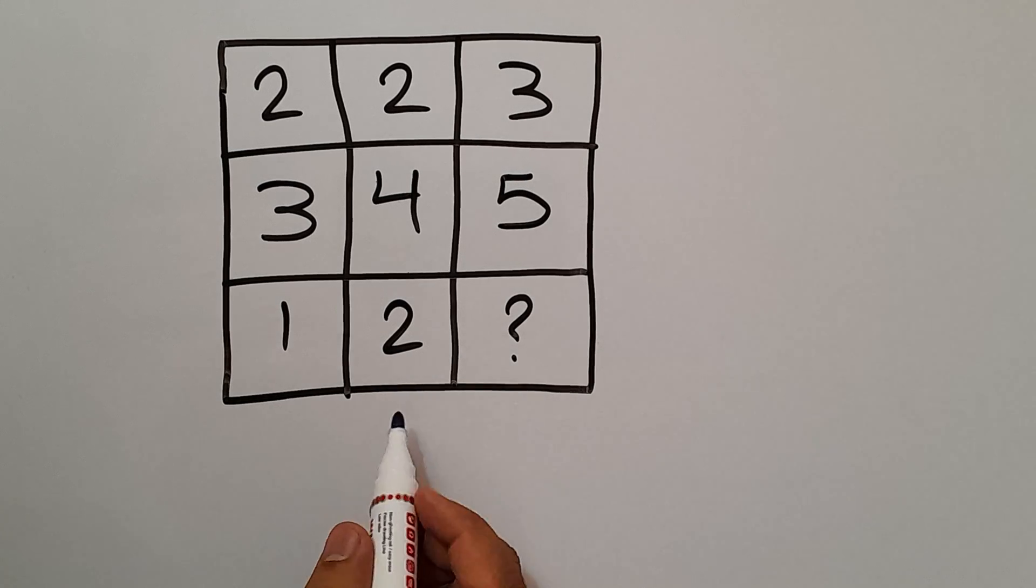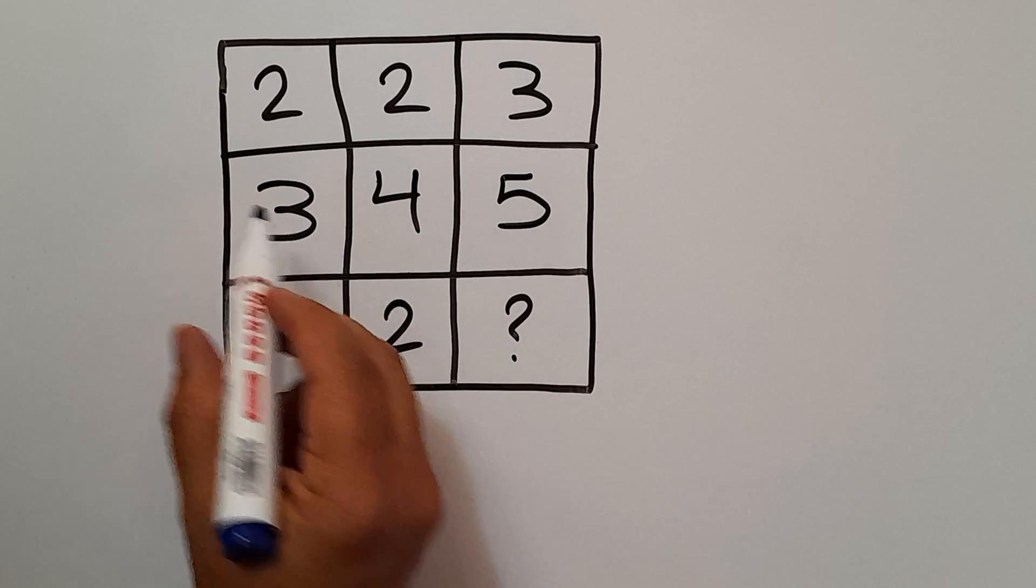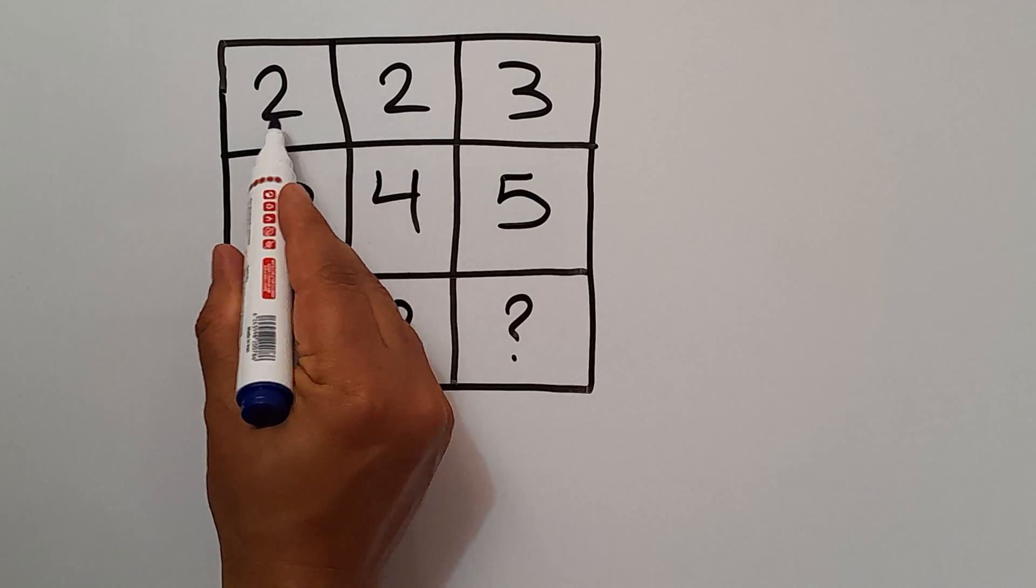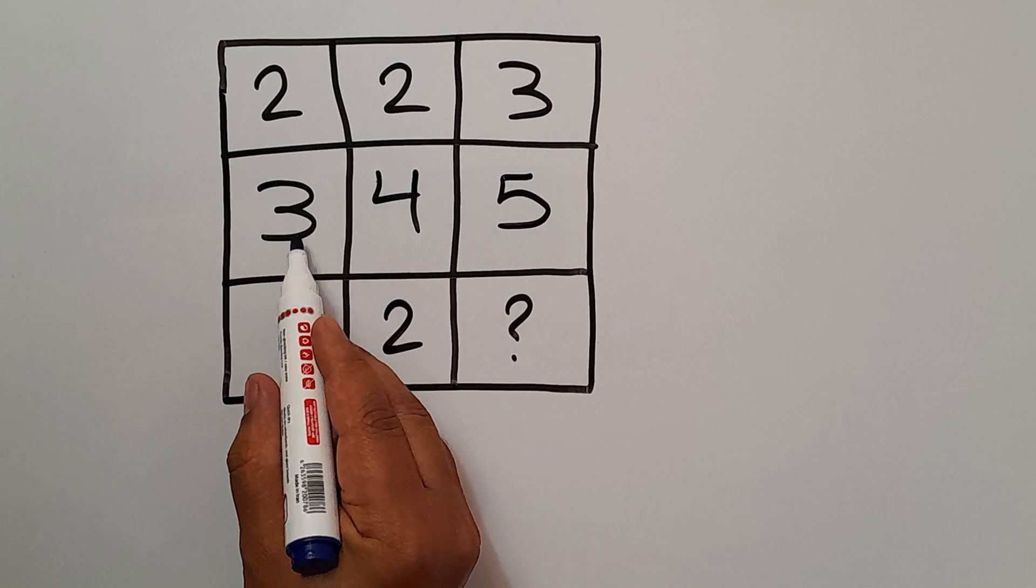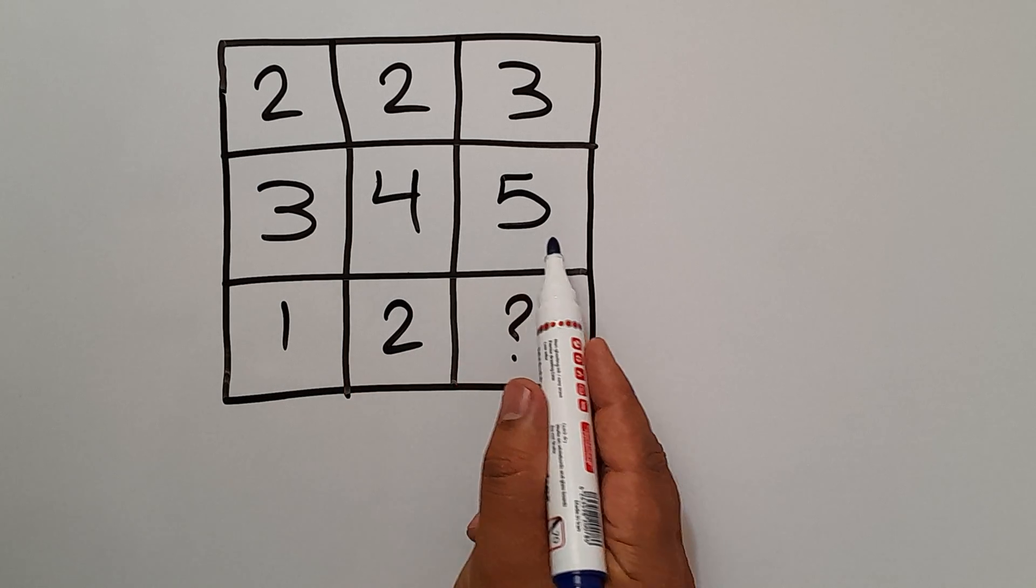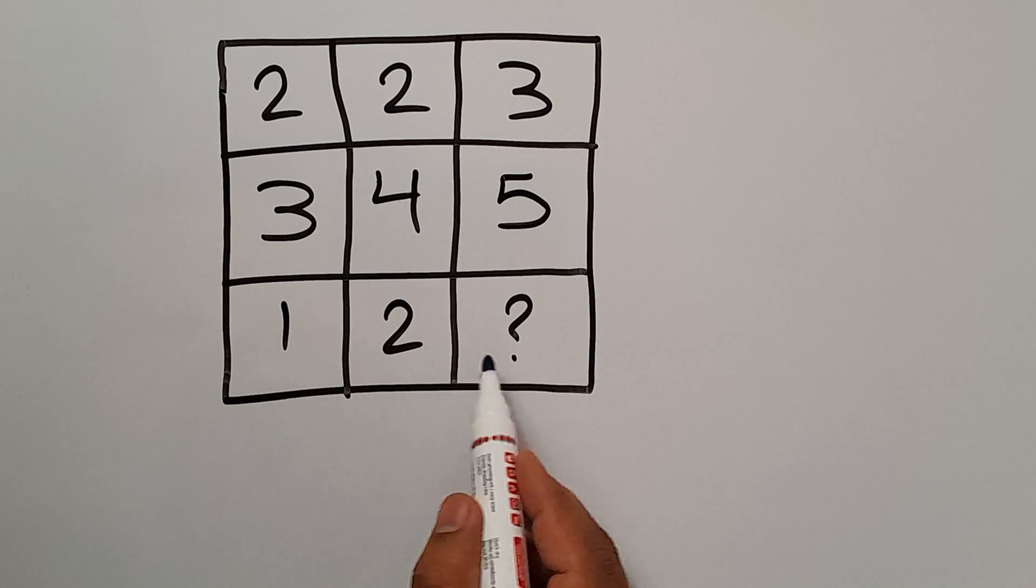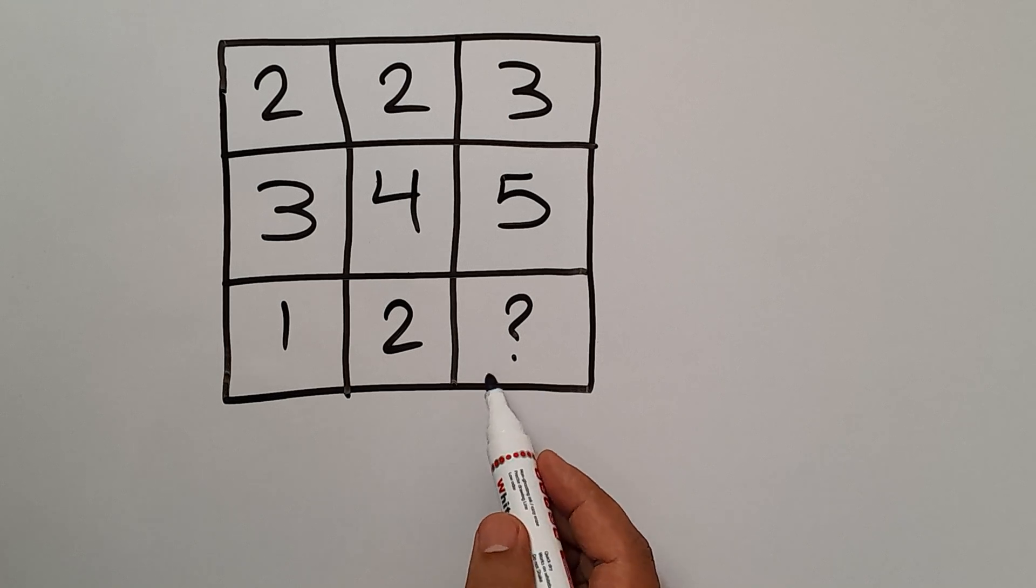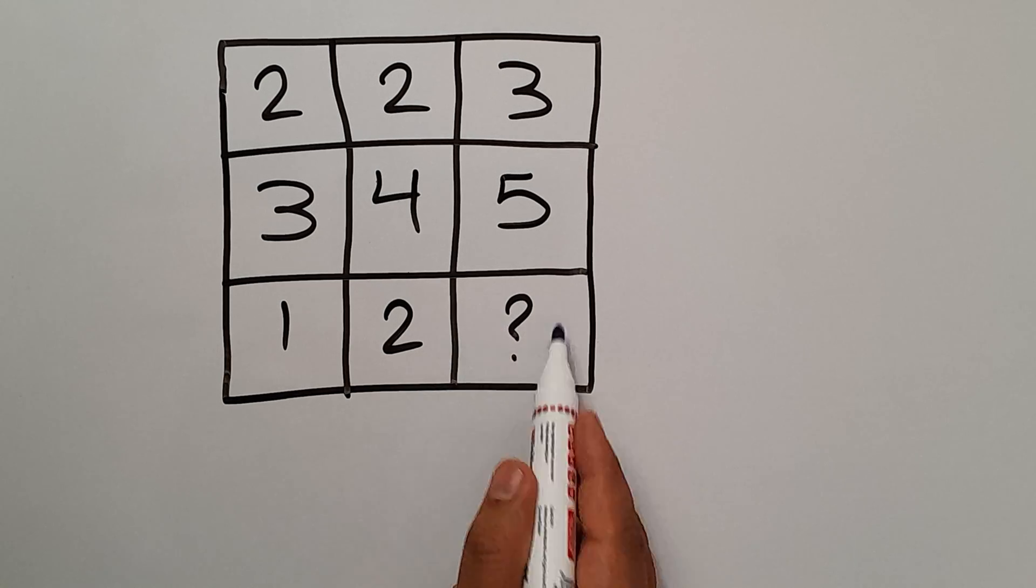Hey guys, welcome to Puzzle Joy. In this video we have a 3 by 3 matrix. In the first row we have 2, 2, and 3. The second row has numbers 3, 4, and 5, and in the third row we have 1, 2, and question mark. Our goal is to find the pattern that exists here and calculate the missing number.